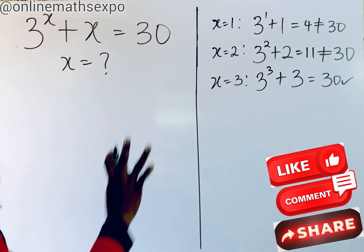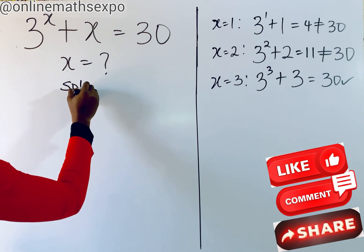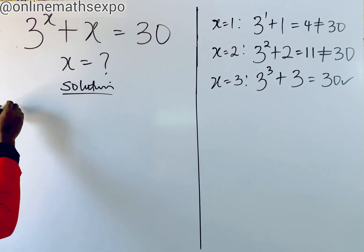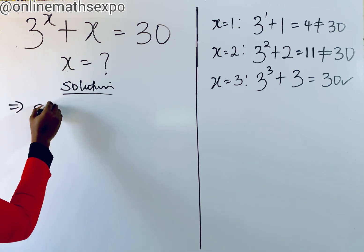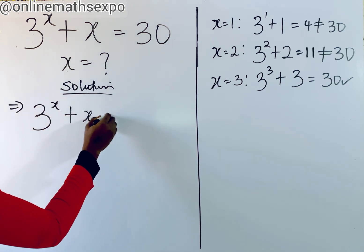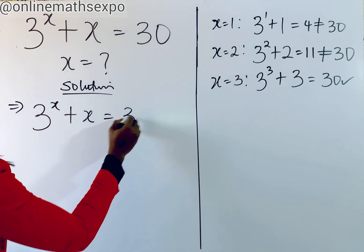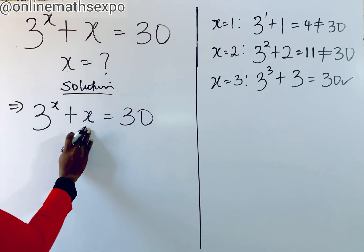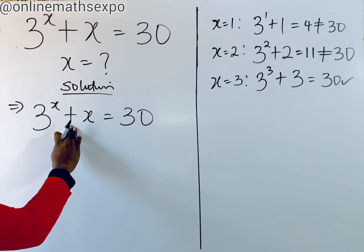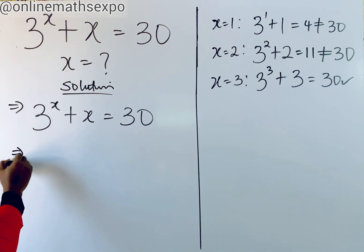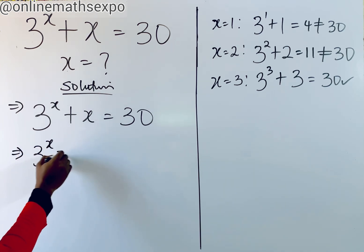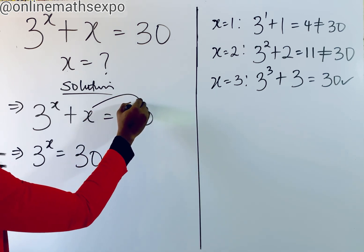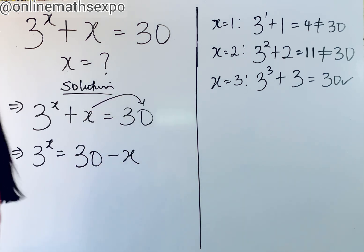To answer this question, we begin with the solution. We repeat what we have: 3 to the power of x plus x is equal to 30. What we do next is remove the x. Because it's adding, we subtract x from both sides. So we have 3 to the power of x is equal to 30 minus x.